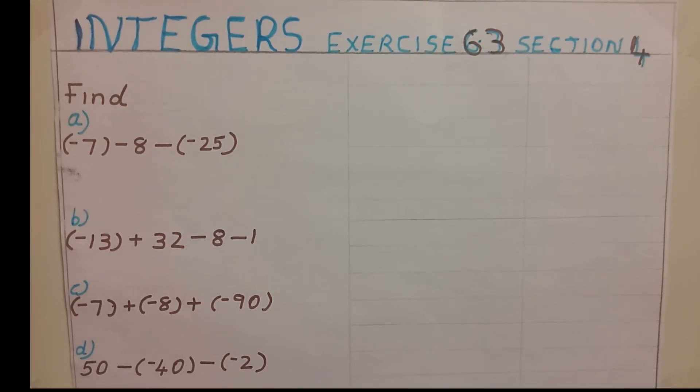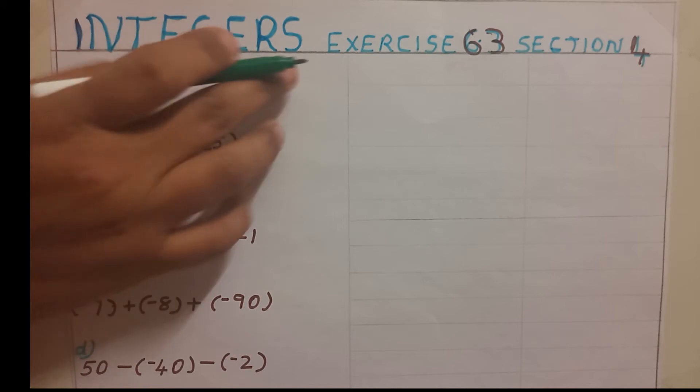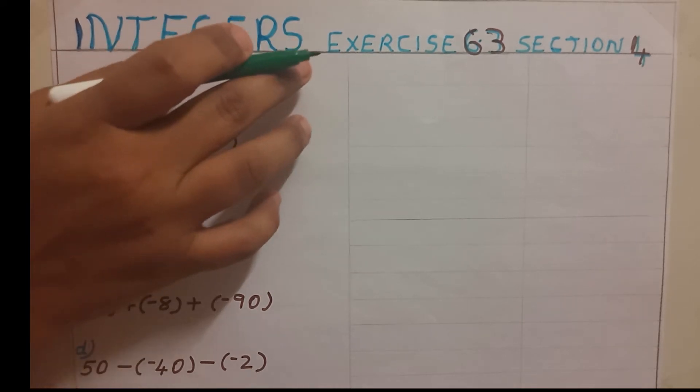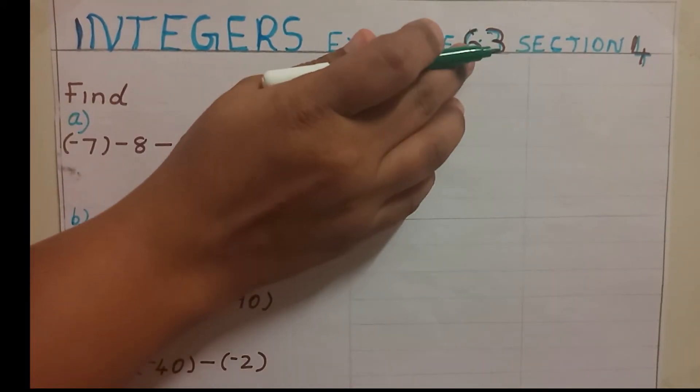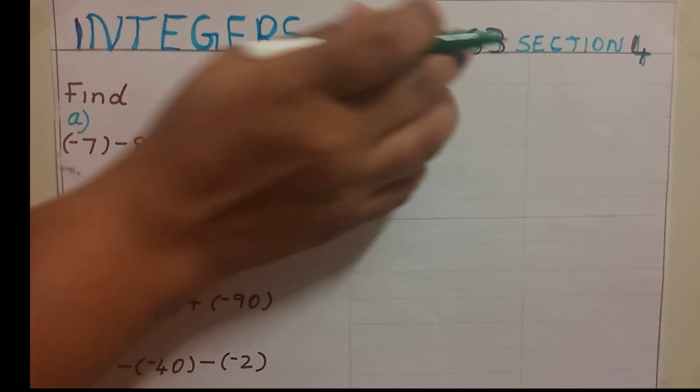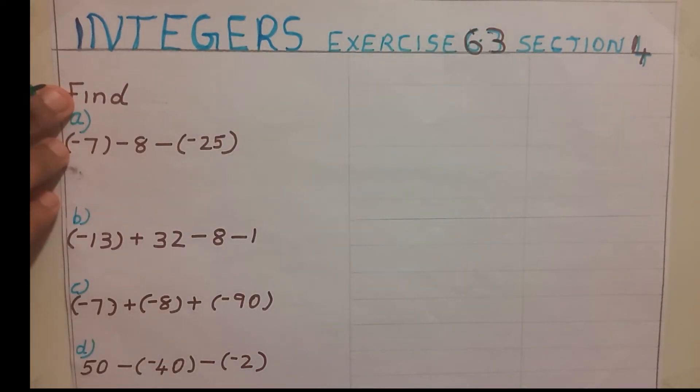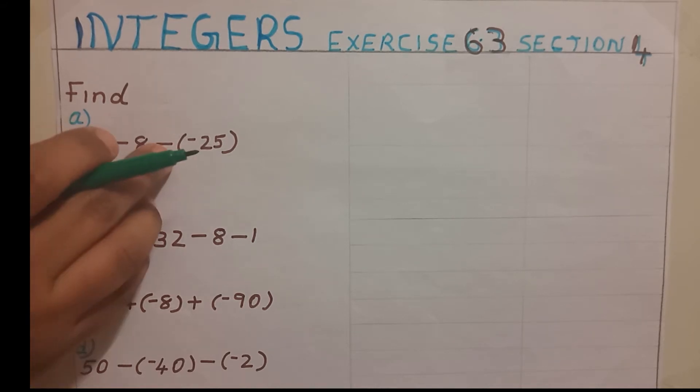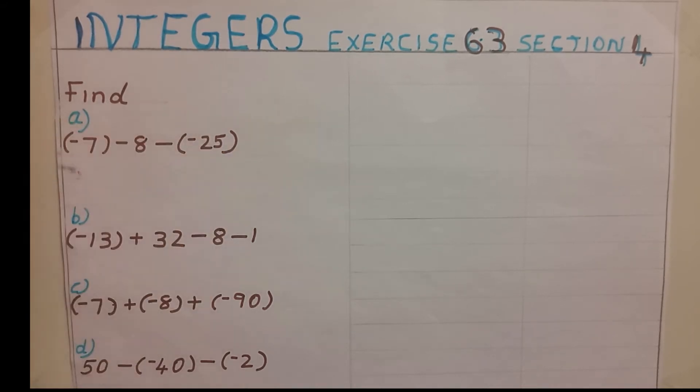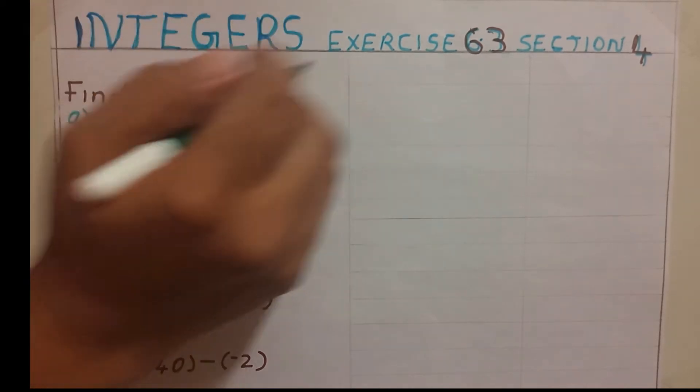Hi kids, in the previous classes we are discussing about integers. Today we are going to deal with the last section of exercise 6.3. First one, find this: minus 7 minus 8 minus of minus 25.